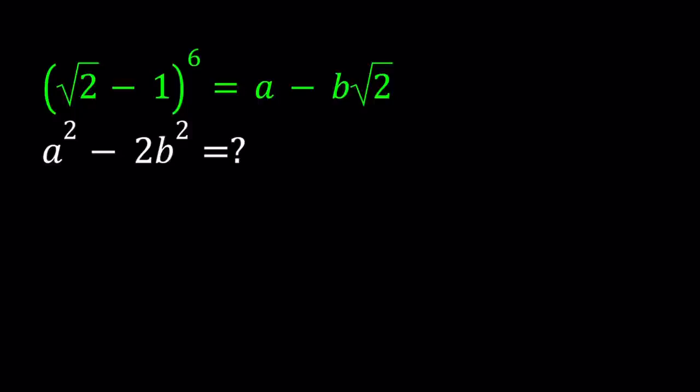Hello everyone. In this video, we're going to be solving an interesting problem which is kind of homemade. We have square root of 2 minus 1 to the 6th power equals a minus b times the square root of 2. In this case, a and b are integers. And we're going to evaluate a squared minus 2 times b squared.